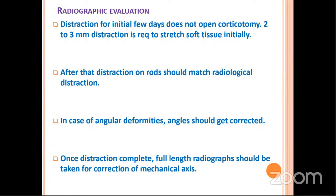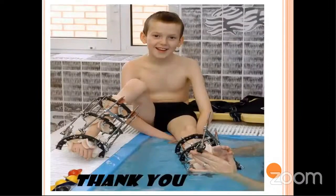Radiological evaluation is important. Initially during distraction, the clinical distraction may not match the radiological distraction because it takes two to three millimeters of distraction at the frame for the soft tissue to get stretched, after which the bone at the corticotomy site will get distracted — and after that, the radiological and clinical correlation should be exact. In case of angular deformities, the angles should get corrected. Once distraction is complete, a full-length radiograph should be taken for measurement of the mechanical axis and alignment confirmation. Thank you.